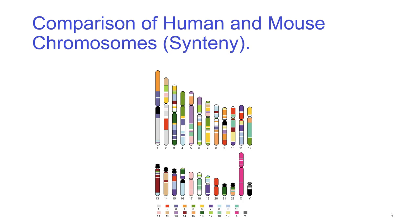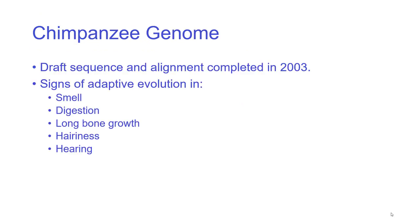As the chromosome structure and order changes, crossover becomes impossible and reproduction cannot occur. This is why crossing a donkey with a horse gives a sterile mule — because of these chromosome shifts. A human-mouse cross is impossible due to these chromosome rearrangements and the different number of chromosomes.